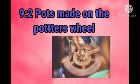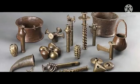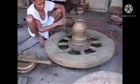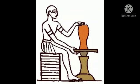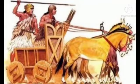9.2 Pots Made on Potter's Wheel. The copper age was the age of many new inventions — invention means discoveries. For example, the invention of the wheel was the most important discovery of the copper age and brought rapid changes in society. It is agreed that the wheel was first made as a tool for potters. After that, the wheel was used in carts and chariots for transportation.